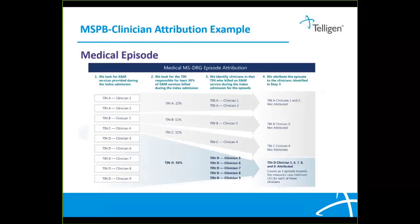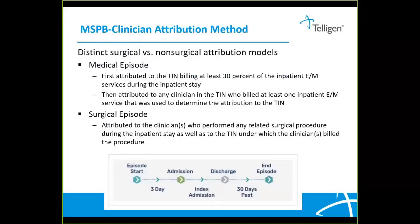Here are the distinct attribution methods for surgical and non-surgical procedures. For a medical episode, it is first attributed to the TIN billing at least 30% of the inpatient E&M services during the inpatient stay. Then it is attributed to any clinician in the TIN who billed at least one inpatient E&M service that was used to determine the attribution to the TIN.